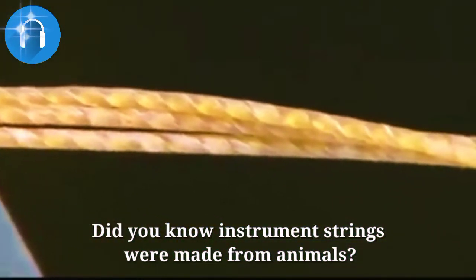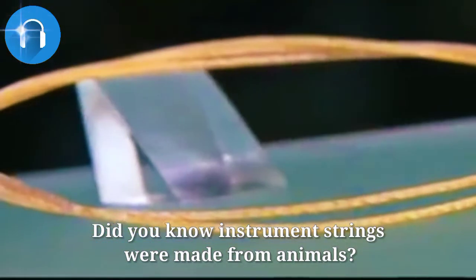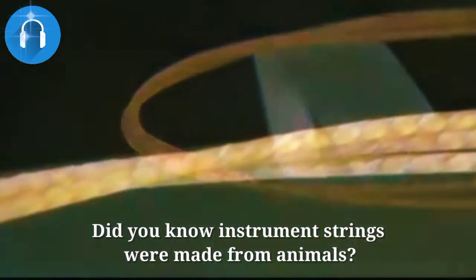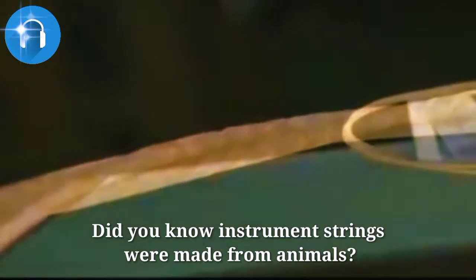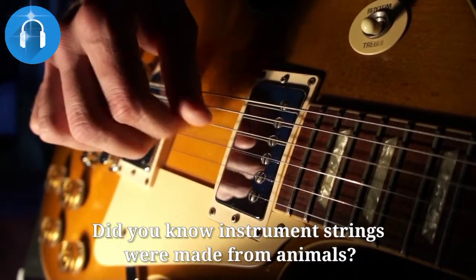The strings of string instruments were originally made from the guts of animals like sheep or lambs. Now instrument makers have transitioned to metal wiring.